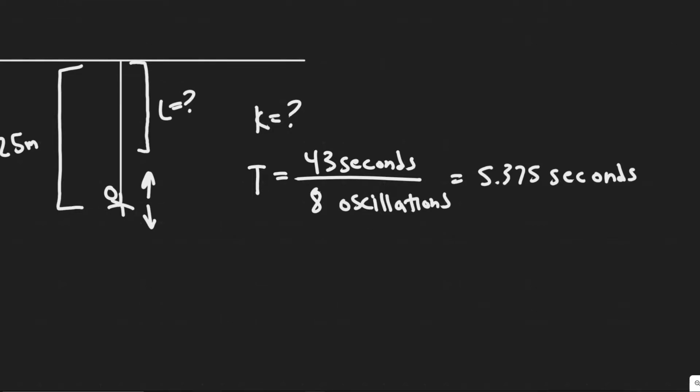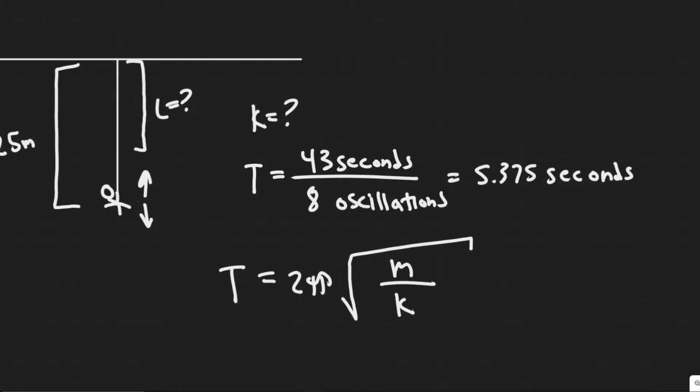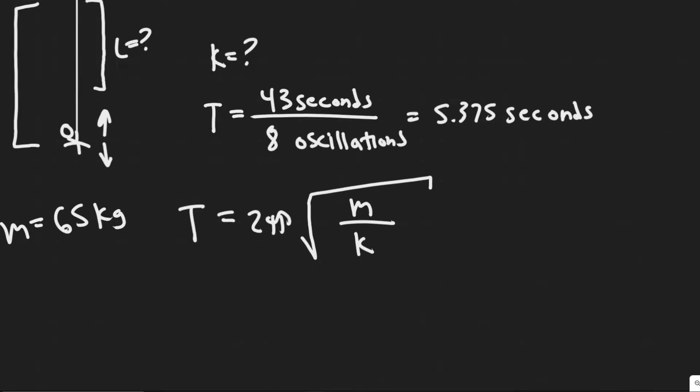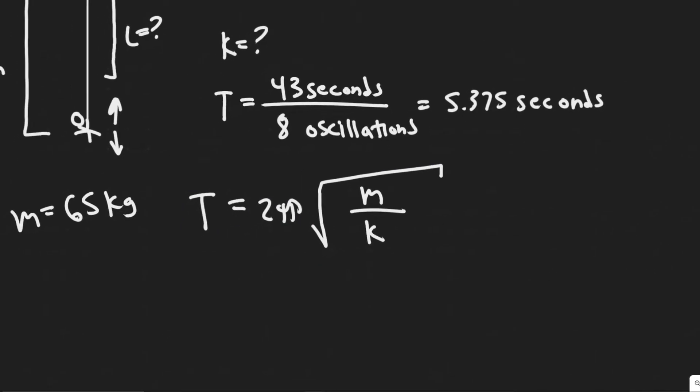The way we solve for this is by using this formula for simple harmonic motion. The period is equal to 2π times the square root of the mass divided by the spring stiffness constant k. So we just solved for the period. We know the mass of our jumper is equal to 65 kg, meaning all we got to do is manipulate this equation in order to solve for k, because all the other variables we know.